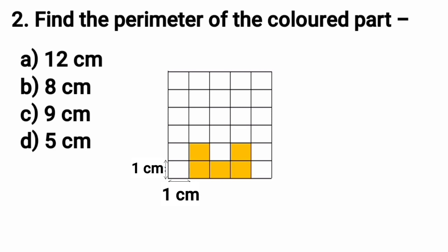So kids, here we will count the length of all the sides of this colored part. Let's start: 1 cm, 2 cm, 3 cm, 4 cm, 5 cm, 6 cm, then 7 cm. Then moving downwards it is 8 cm, 9 cm. Then we will take a turn: 10 cm, 11 cm, and 12 cm.